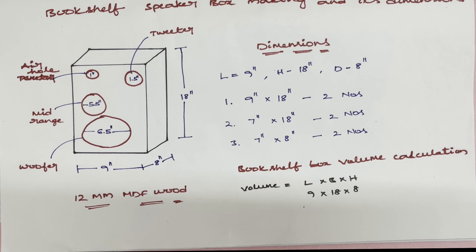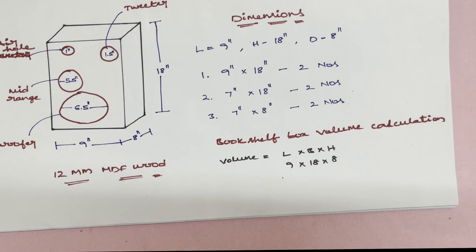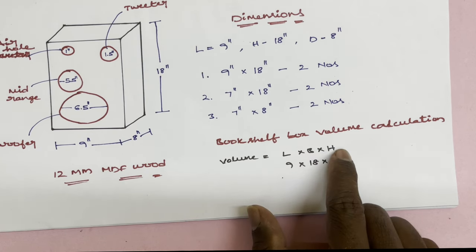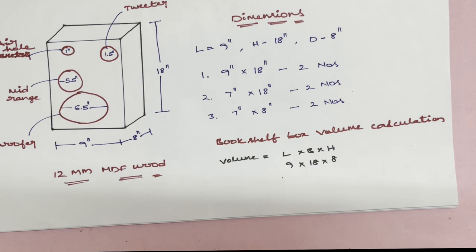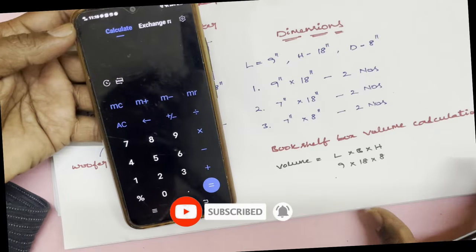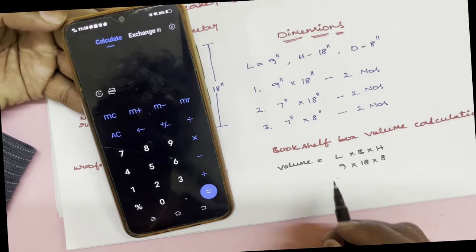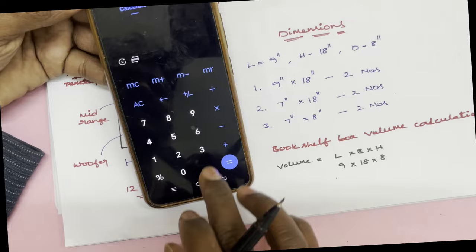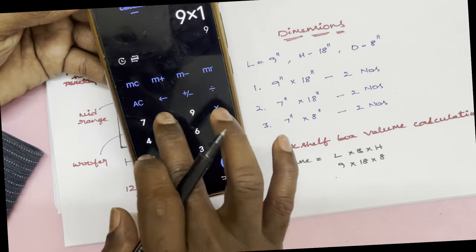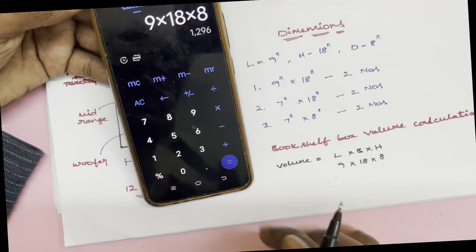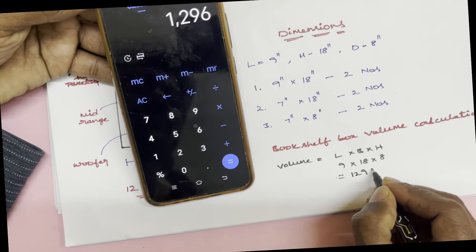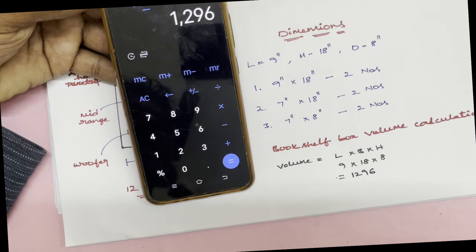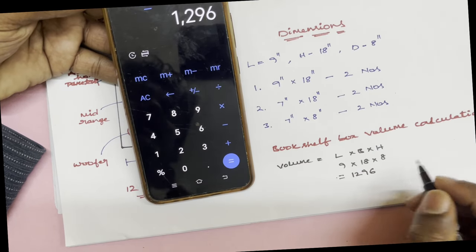Now we will calculate the volume. The value that you see, this value is equal to length times width times height. That is 9 x 18 x 8. This gives us 1296 cubic inches. To convert to cubic feet, we divide by 1728.